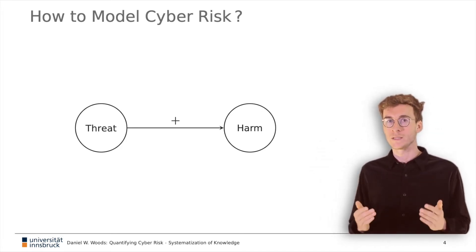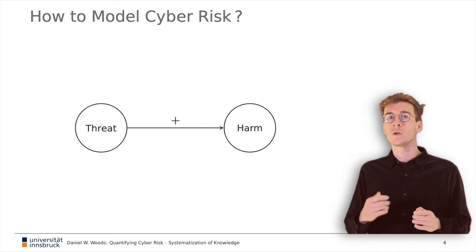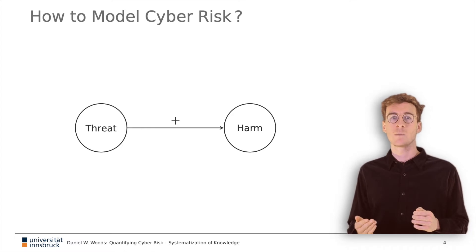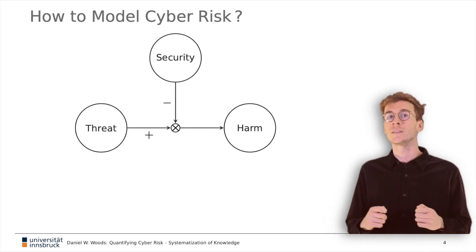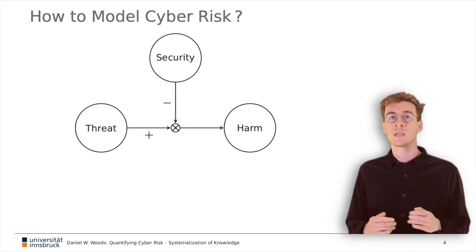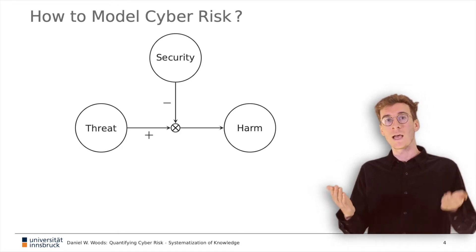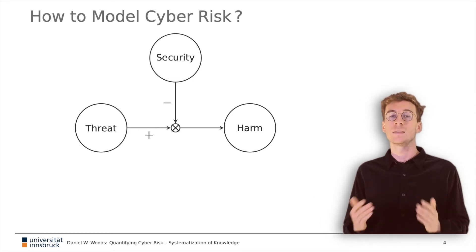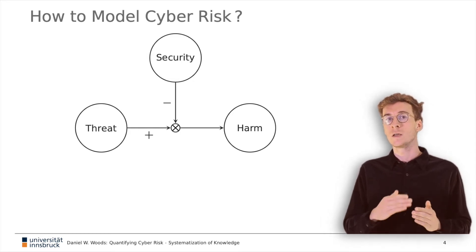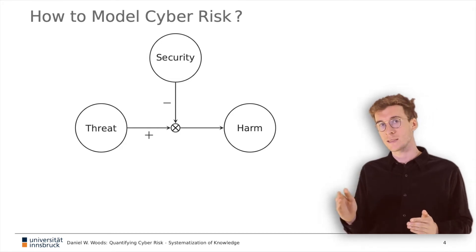The backbone of our model should be a positive relationship between threat level and harm, which can be seen here. All hope is not lost, however. Interventions exist that can reduce expected harm for a given threat level, and we call the sum of all such interventions the security level. Here we have the expected relationship: for a given threat level, a higher security level leads to less harm. In this sense, security moderates the relationship between harm and the threat level.